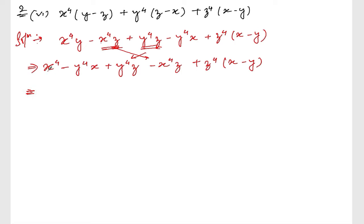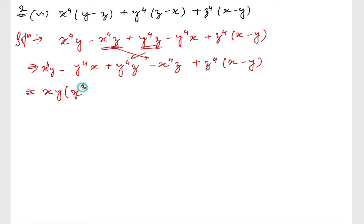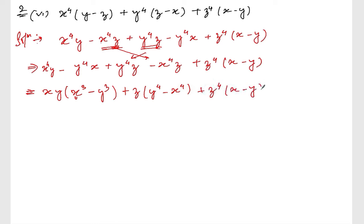So x to the power 4 times y, minus y to the power 4 times x. If I take xy common from these, xy is taken out, leaving x cube minus y cube. Then x cube minus y cube can be written as (x minus y)(x square plus xy plus y square). And from the middle group, I take z common, giving y to the power 4 minus x to the power 4, plus z to the power 4 times (x minus y).